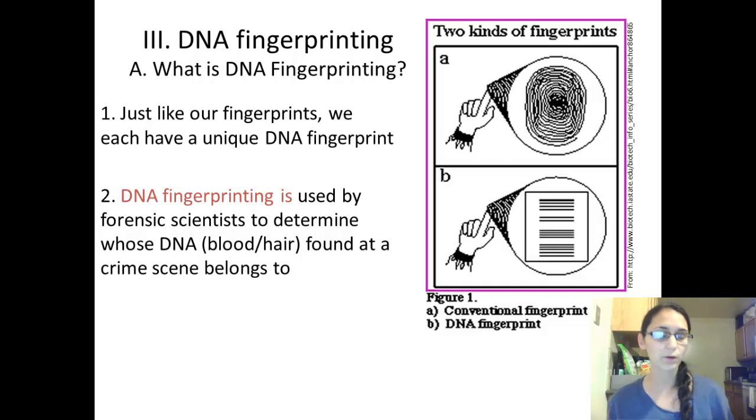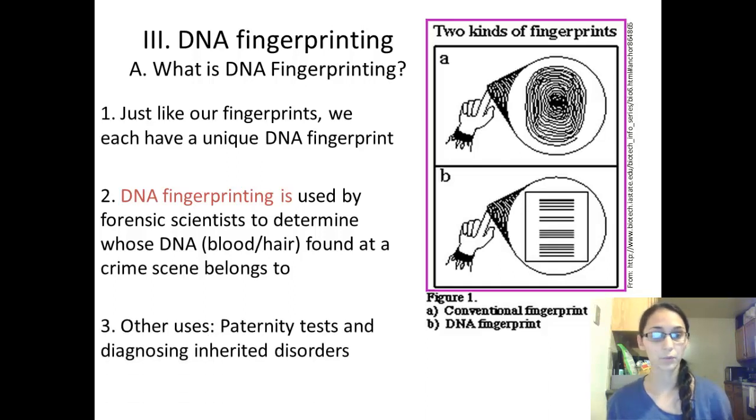If they find blood or a hair sample of the suspect, then they can use it to determine who committed the crime. Other uses for DNA fingerprinting are paternity tests and diagnosing inherited disorders.